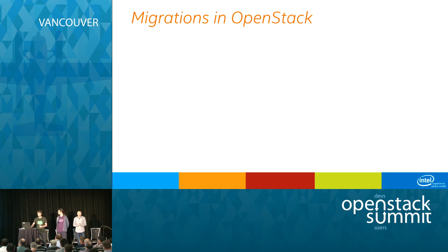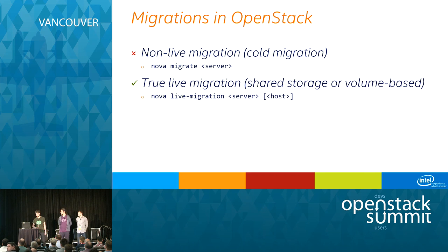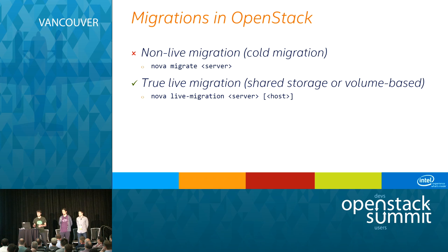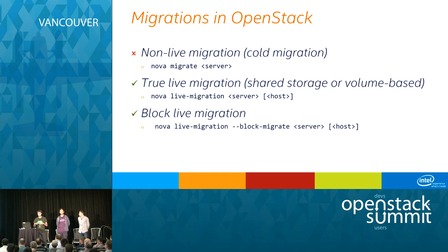In OpenStack there are various types of live migrations. First, there's non-live migration — simply shutting down the VM on the source host and booting it up on the destination host — which we won't cover here. True live migration can be based on shared storage or volumes, requiring shared storage such as SAN or NFS, or booting VMs from volumes. There's also block live migration, which doesn't require shared storage but transfers the ephemeral disk over the network. The problem is that the VM is suspended during the disk transfer, so downtime is quite high, but it is still a form of live migration.